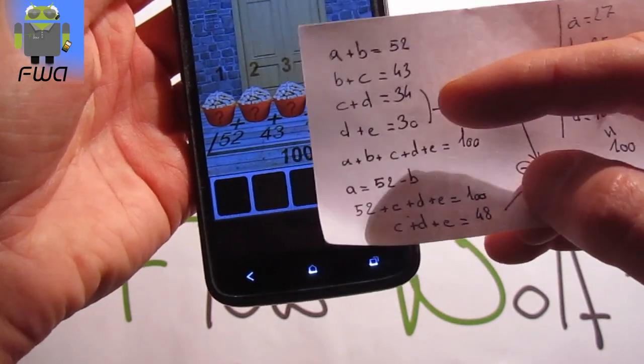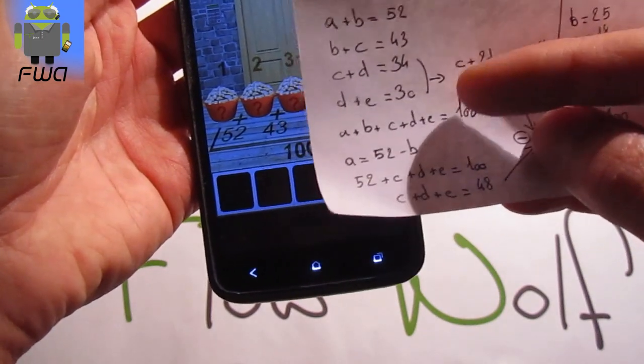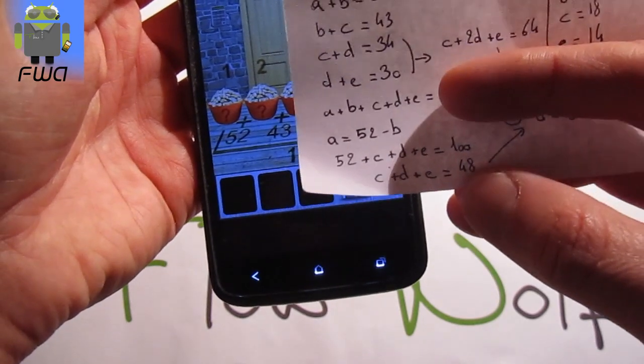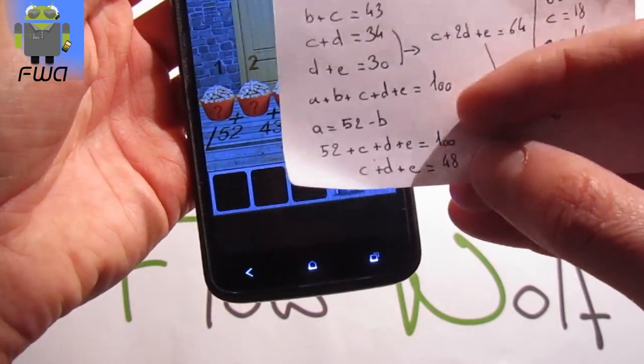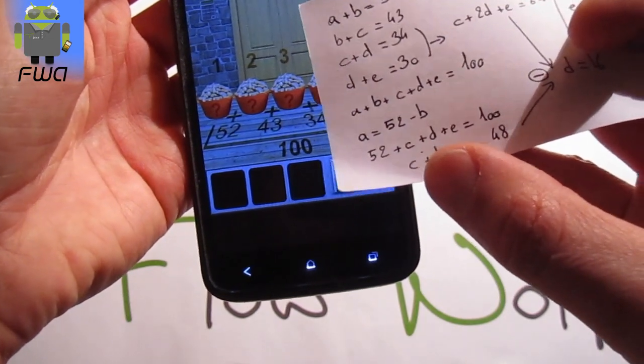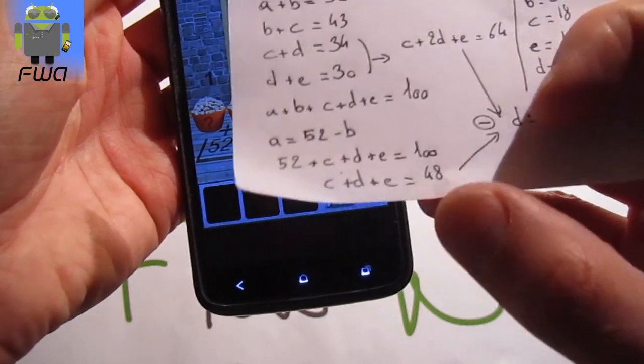Then we can change in this equation a by 52 minus b. So we get 52 minus b plus b plus c plus g plus e. This is this line just there. And we get 52 plus c plus g plus e equals 100. So c plus g plus e equals 48.